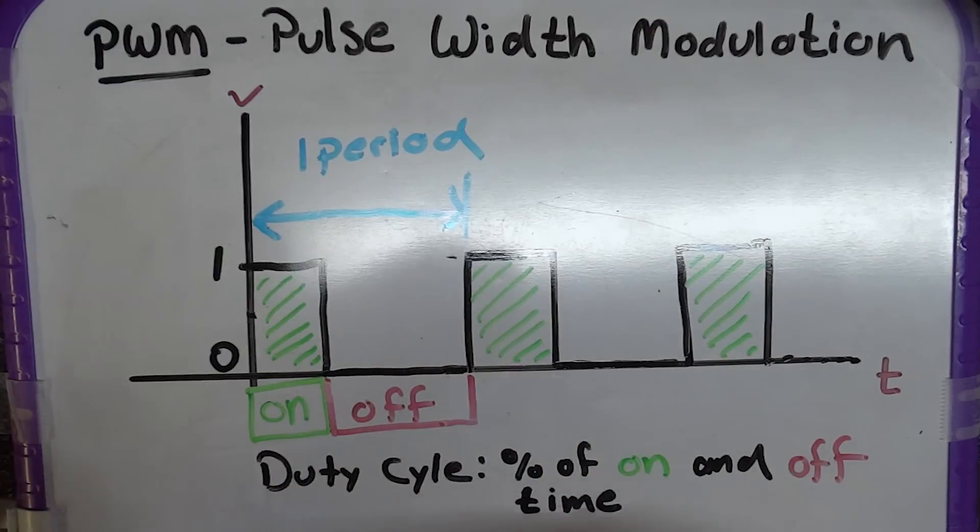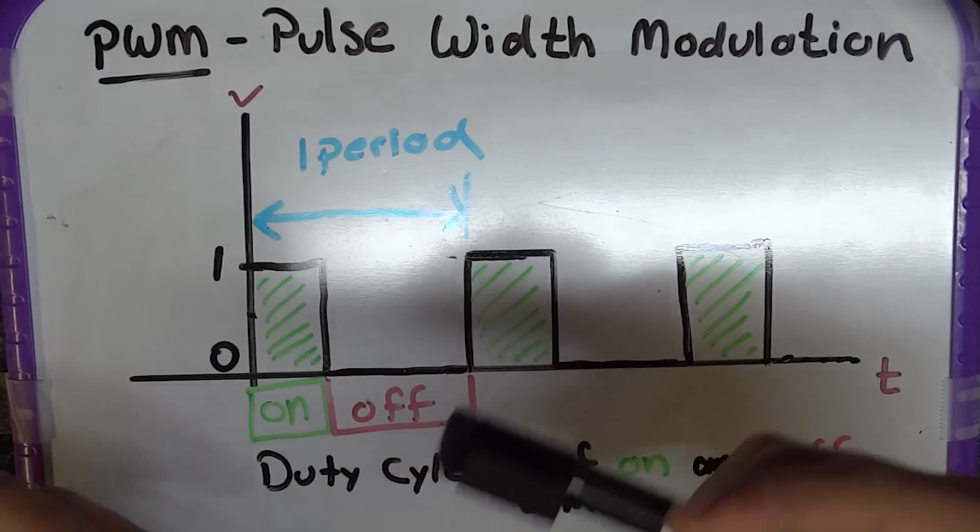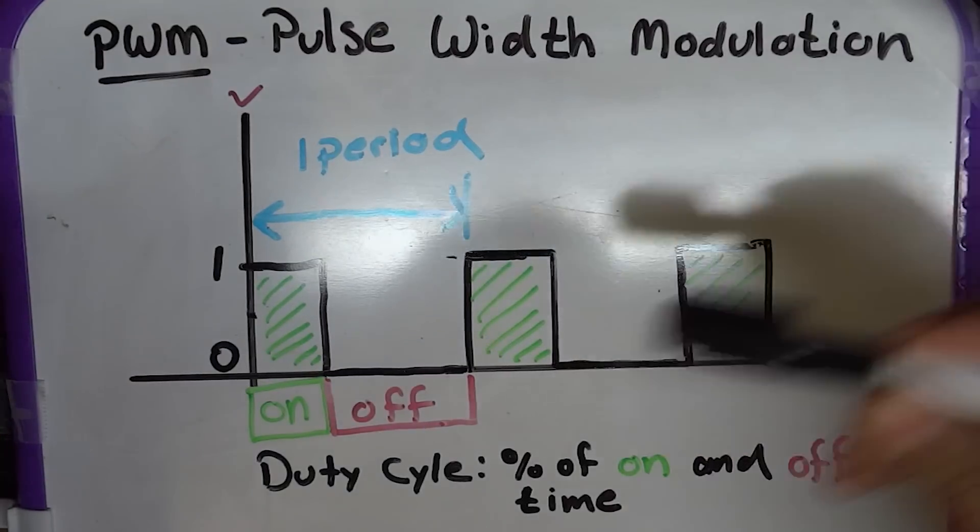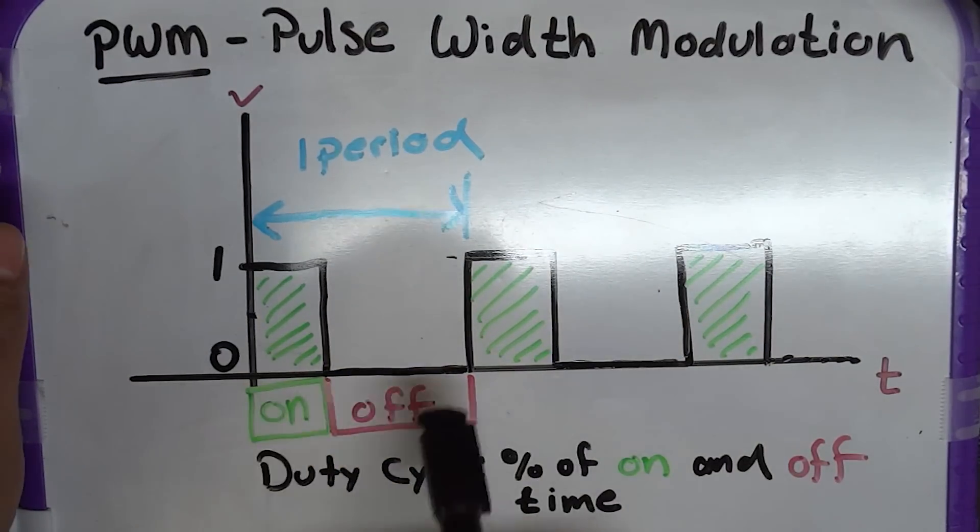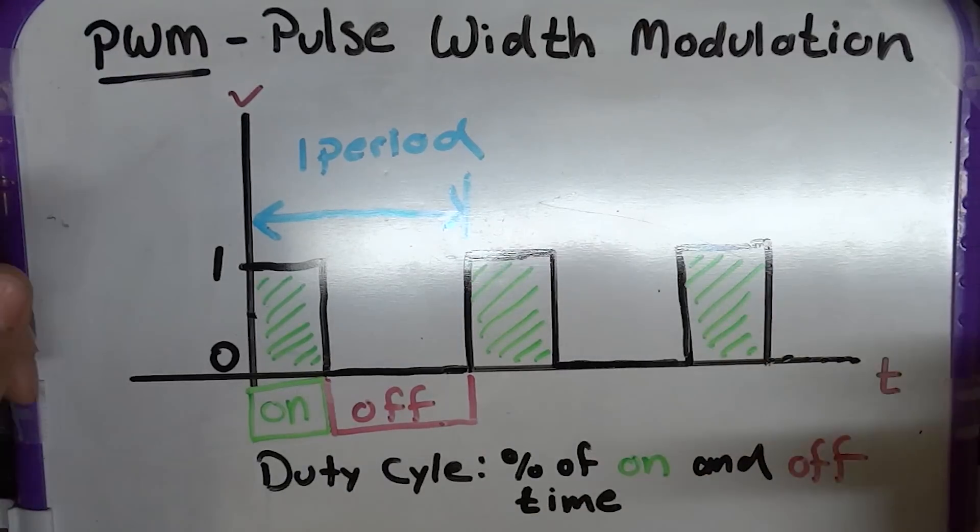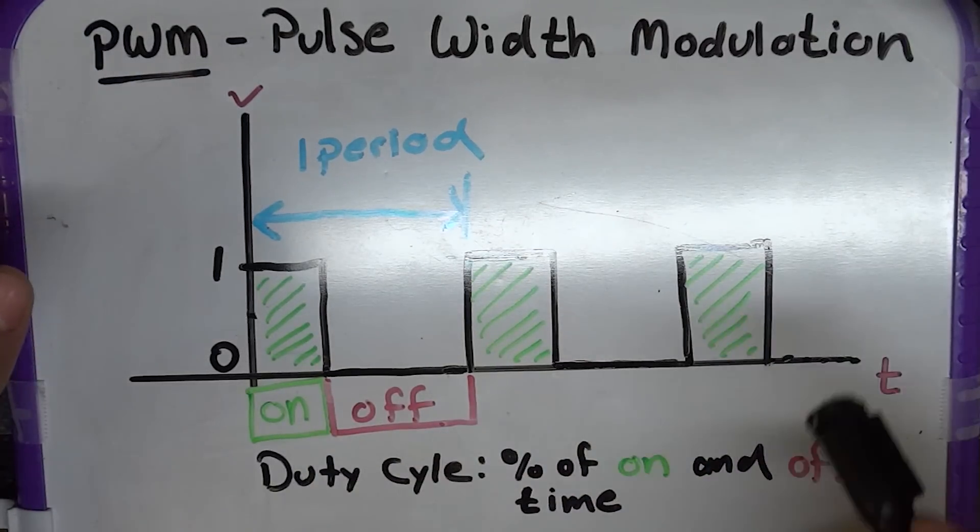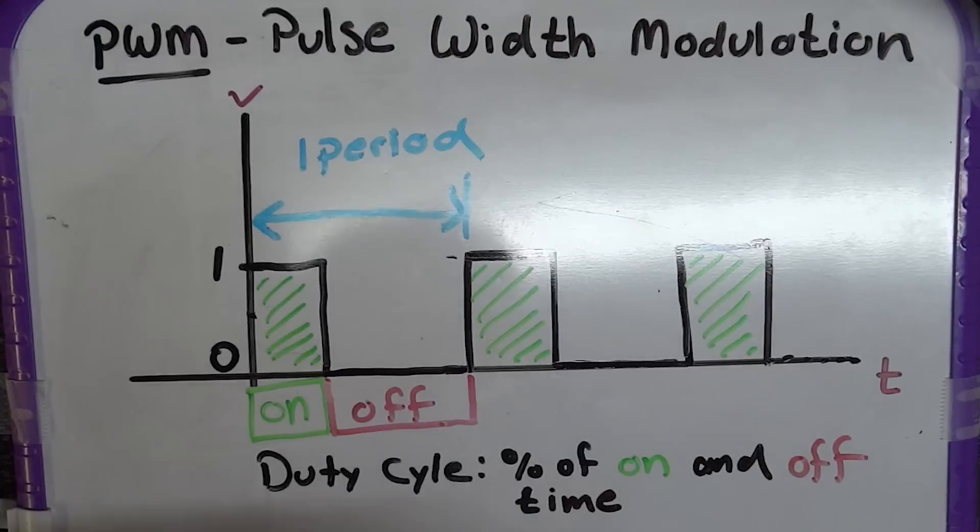So some things you need to understand in order to really analyze what it is and how to use it, you would need to know its period, how long it's on and how long it's off. That's pretty much it. You can then calculate a bunch of things. So let's start with the period.